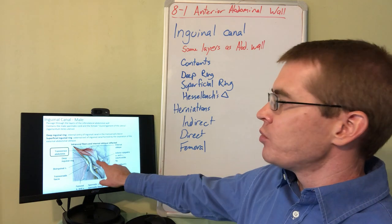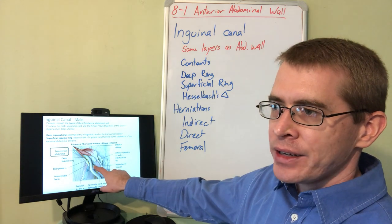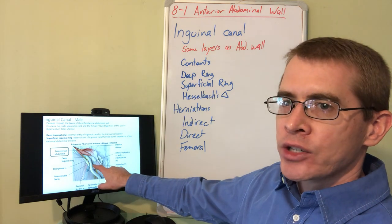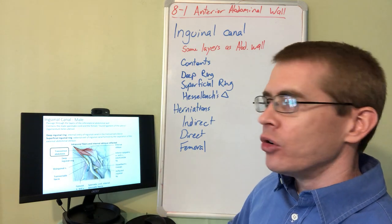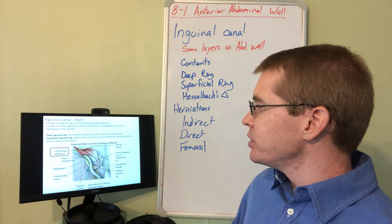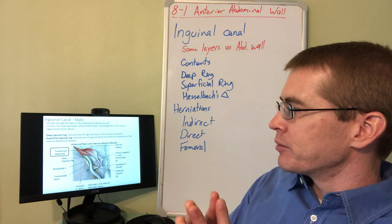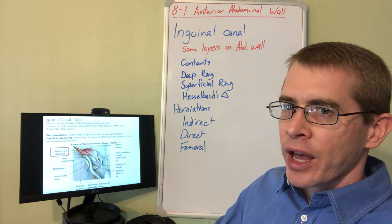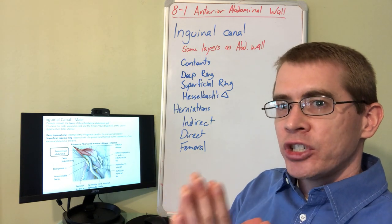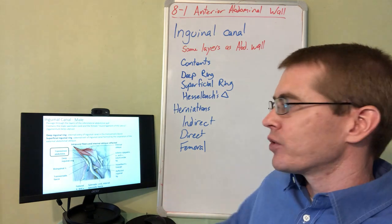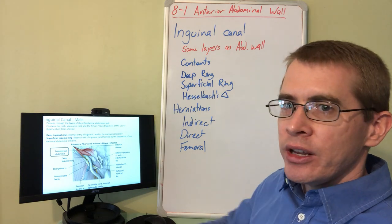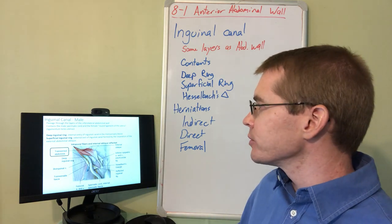There is a small region just behind the superficial inguinal ring called Hesselbach's triangle. Hesselbach's triangle is a region of the transversalis fascia with clinical implications — it is particularly weak and allows for herniation of structures through it with an increase in abdominal pressure.